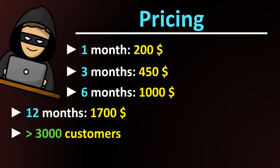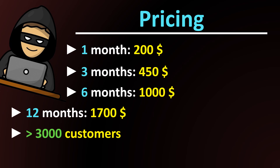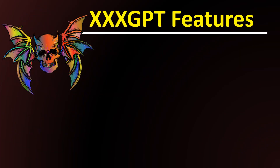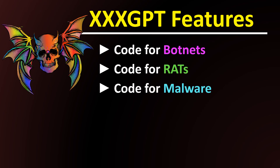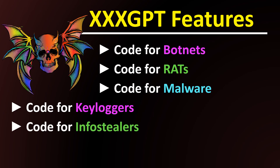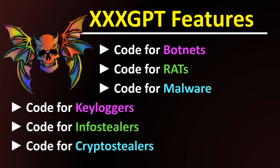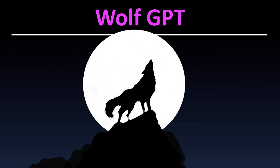Two more AI models developed specifically for criminal activities are DarkGPT and WolfGPT. According to the developers, DarkGPT is backed by a team of five individuals. The feature list includes: code for botnets, code for RATs (remote access trojans), code for malware, code for keyloggers, code for infostealers, code for cryptostealers, and much more. WolfGPT is a Python-developed alternative to ChatGPT, promising absolute confidentiality and can be used for the development of ransomware as well as advanced phishing attacks.